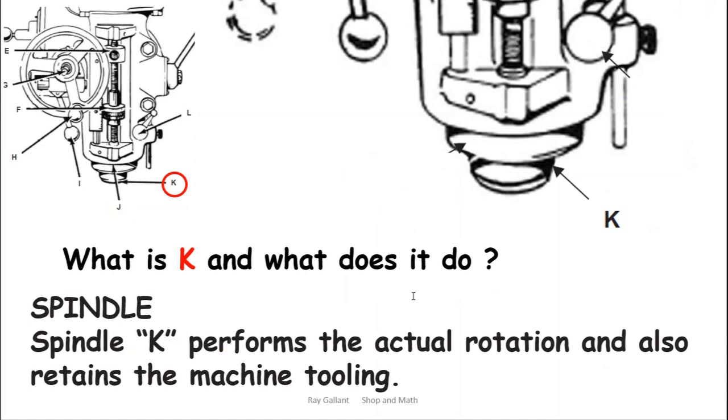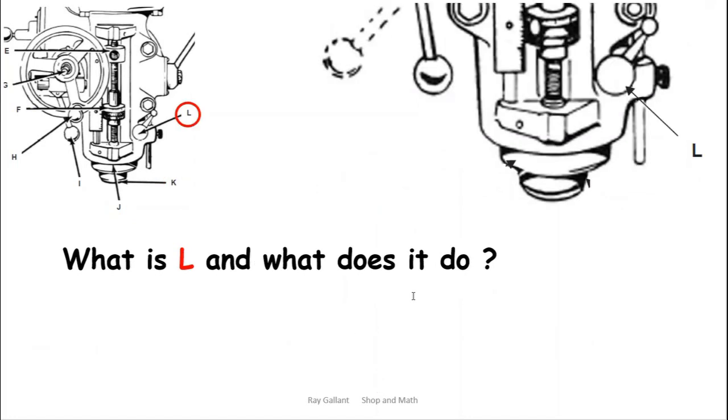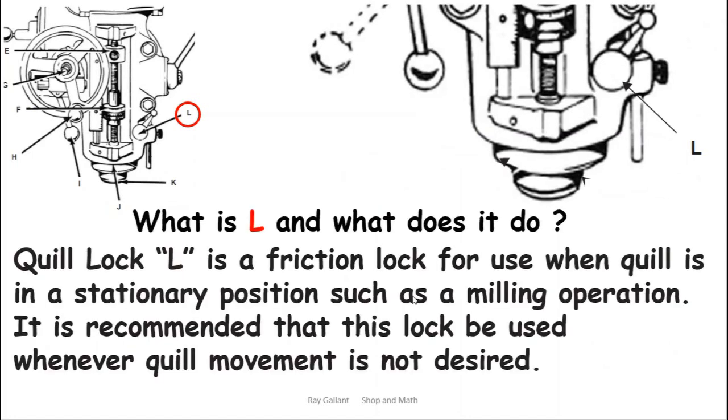What does L do? L's your quill lock. It's very important to make sure that when you're drilling or doing anything else, if you're moving the quill up and down, don't have the quill locked. Have it unlocked. It's just a piece of brass pushing up against the quill, it's like a friction lock.